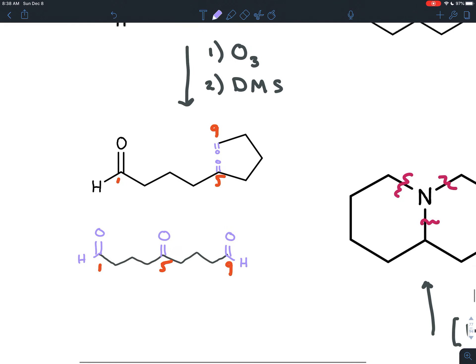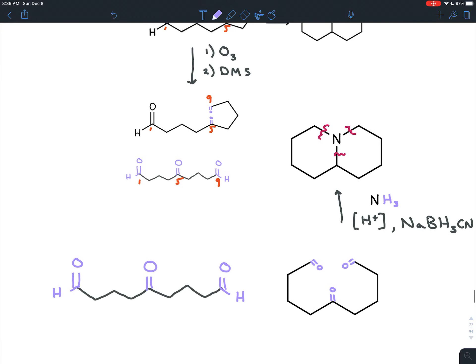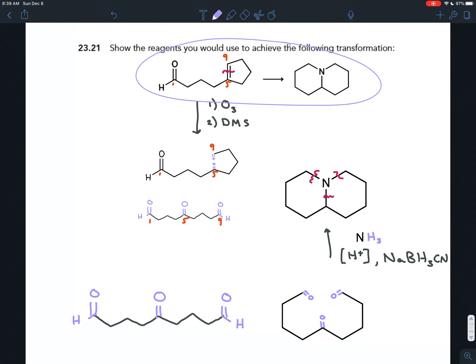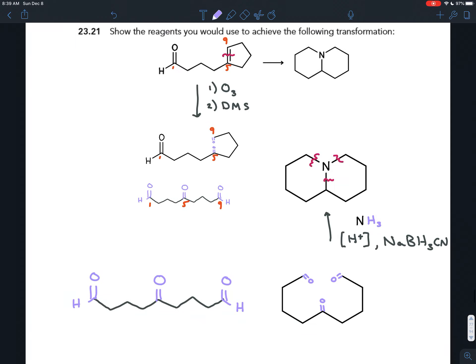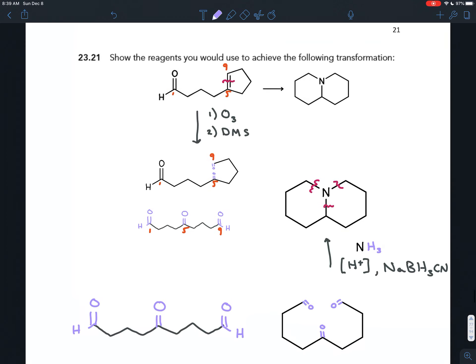But notice when we do that, we have our final product. We have a carbonyl on carbon number one, on carbon number five, and on carbon number nine. So really, as strange and different as these molecules look, it only takes three steps to turn that original molecule into the final one.